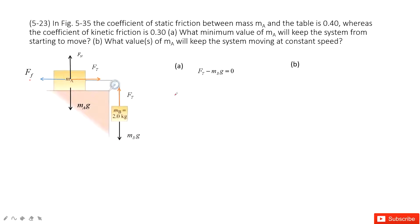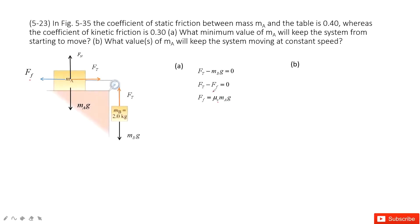Looking at object B, we have tension minus gravity equals zero. For object A, normal force minus gravity equals zero. And because it is stationary, tension minus friction equals zero. This friction is mu_s times the normal force, and the normal force is m_A times g. We use the static friction coefficient and solve to find m_A equals m_B divided by mu_s.